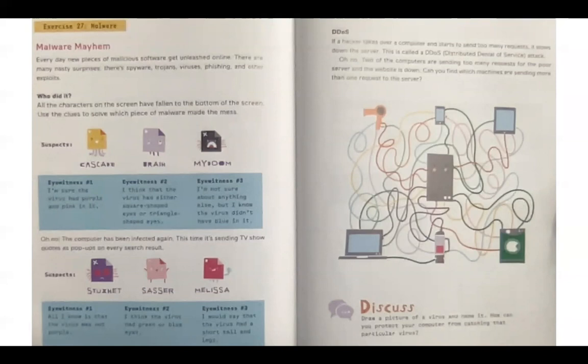Oh, no. The computer has been infected again. This time it's sending TV show quotes as pop-ups every search result. The suspects are Stuxnet, Sasser, and Melissa. Eyewitness one. All I know is that the virus was not purple. Eyewitness two. I think the virus had green or blue eyes. Eyewitness three. I would say that the virus had a short tail and legs.